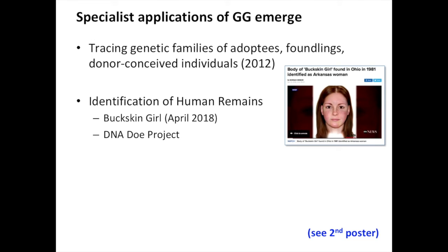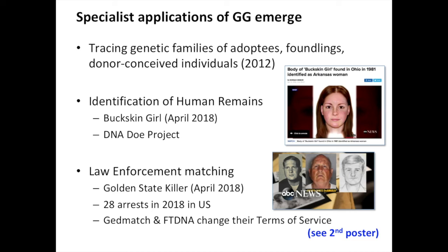Last year we discovered that the same genetic genealogy techniques were being used by law enforcement to identify human remains, and the DNA Doe Project is committed to that particular area of research. The Golden State Killer hit the headlines in April 2018, and since then 28 arrests have been made in the US using genetic genealogy techniques to track down serial killers and rapists. As a result, GEDmatch and Family Tree DNA have changed their terms of service so that law enforcement are allowed to use the database in the same way that any other consumer can.